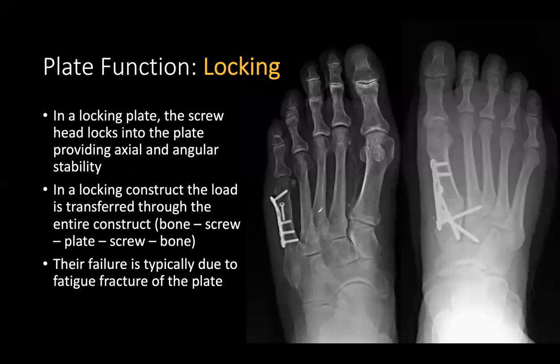In locking plates, the screw heads lock into the plate for axial and angular stability. It doesn't matter if you catch one cortex or two — the screw locks into the plate and acts as a stable construct. In a locking construct, the load is transferred through the entire construct instead of just between the bone and screw. Failure is typically due to fatigue fracture of the plate — when a locking screw breaks, it's usually at the interface between the plate and the screw.